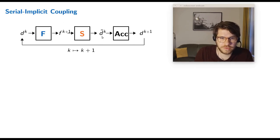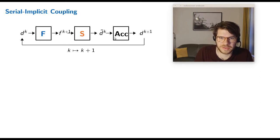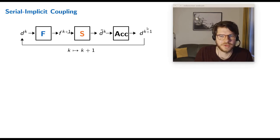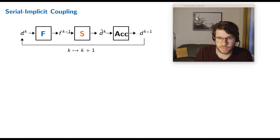We check for convergence by comparing the output displacements to the input displacements. If they're not close yet, we go into the 'magic box' acceleration and get back better displacement values, which we plug in again at the start. I'll tell you more about this magic box in a minute.